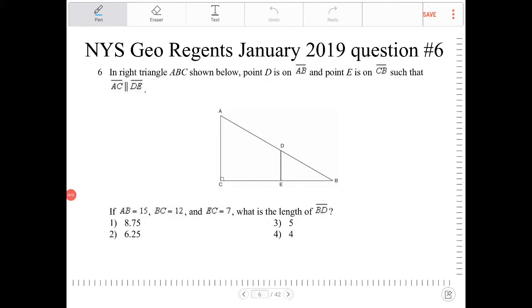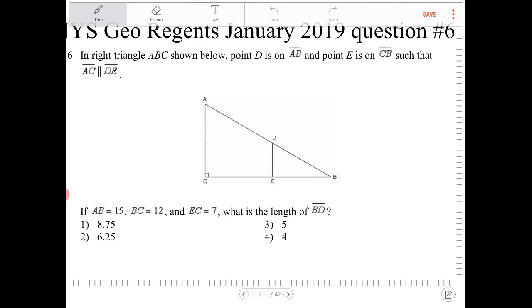In right triangle ABC shown below, point D is on segment AB and point E is on segment CB such that AC is parallel to DE. So AC here is parallel to DE, and they didn't write this in the description but they did indicate this on the diagram.